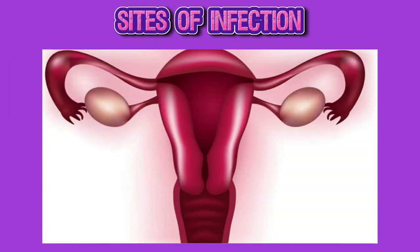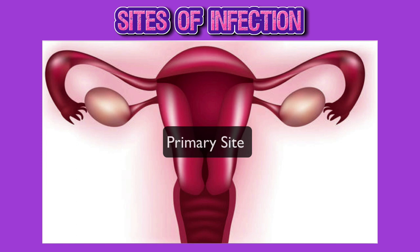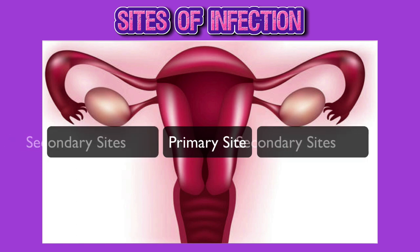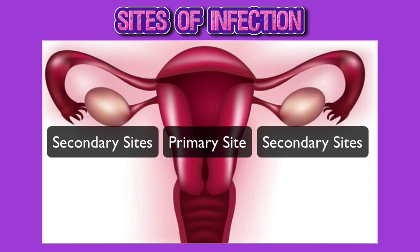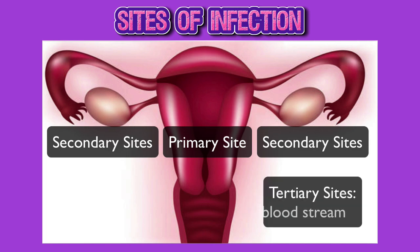The primary site of infection is obviously the uterus, i.e. the endomyometrium. After that, the infection can spread via the parametrium to the fallopian tubes and ovaries, which are the secondary sites. And then it can enter the bloodstream, giving rise to tertiary site infection, i.e. septicemia.